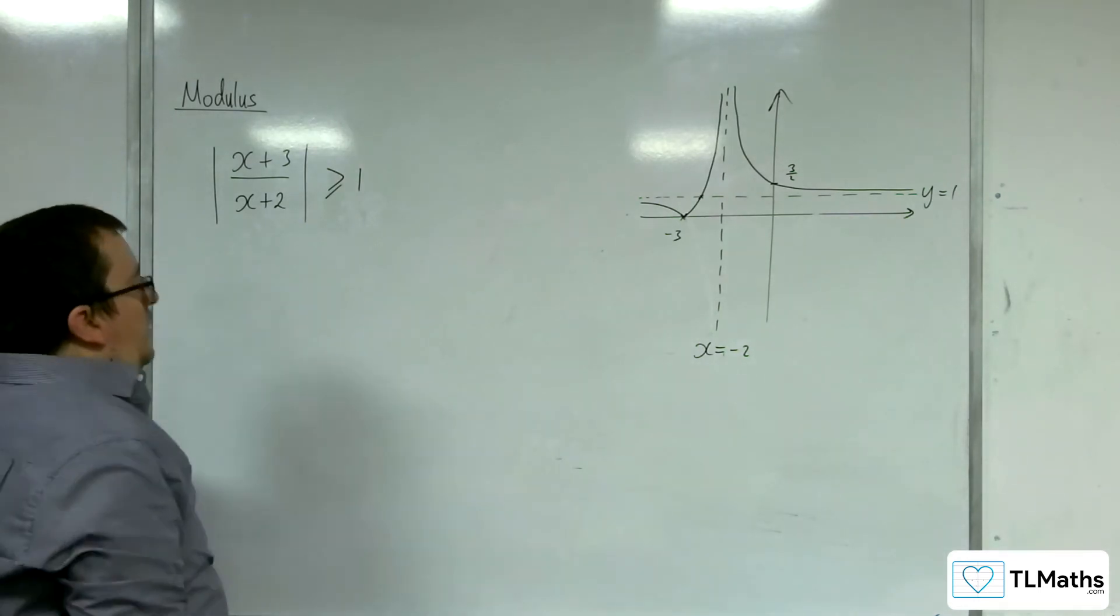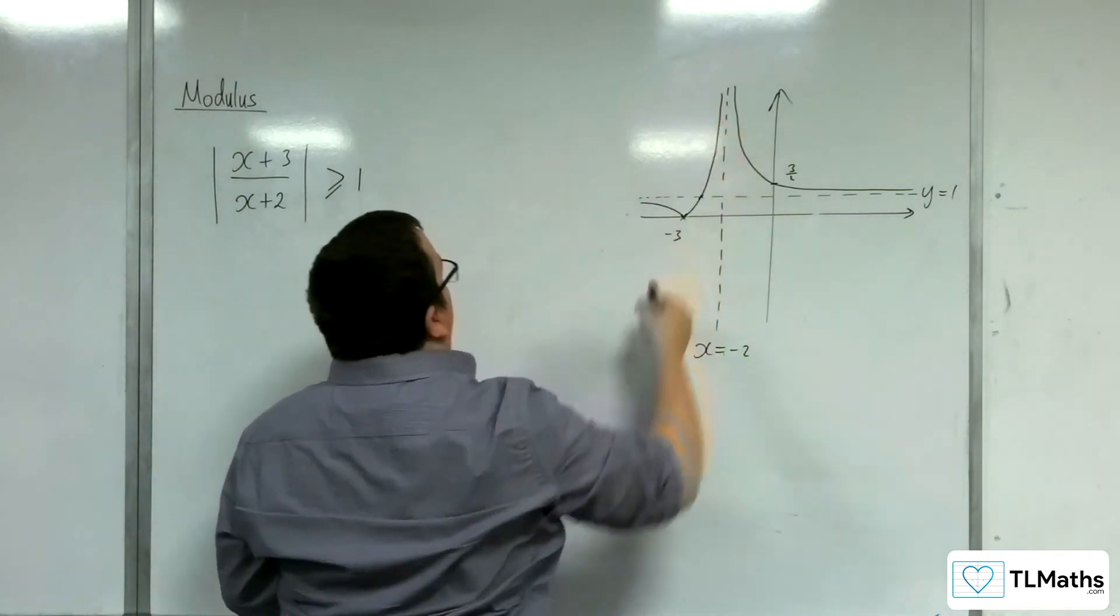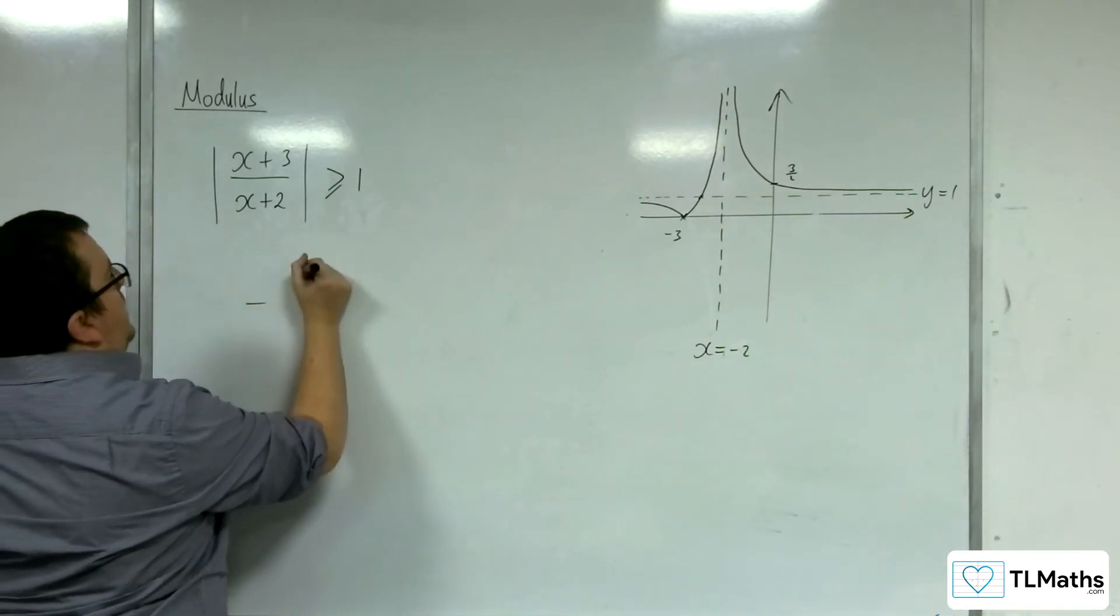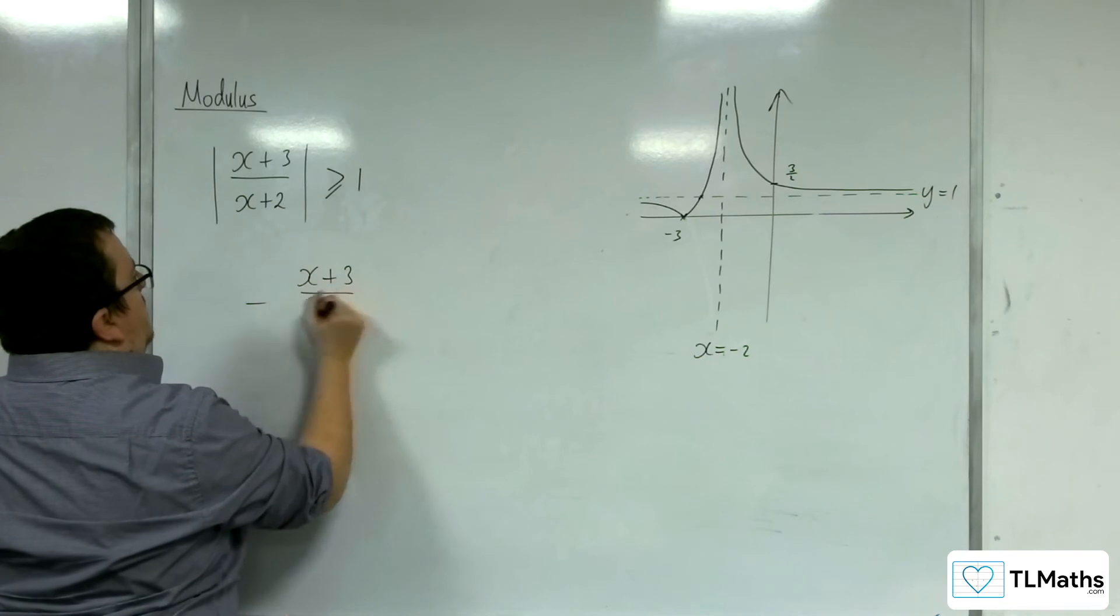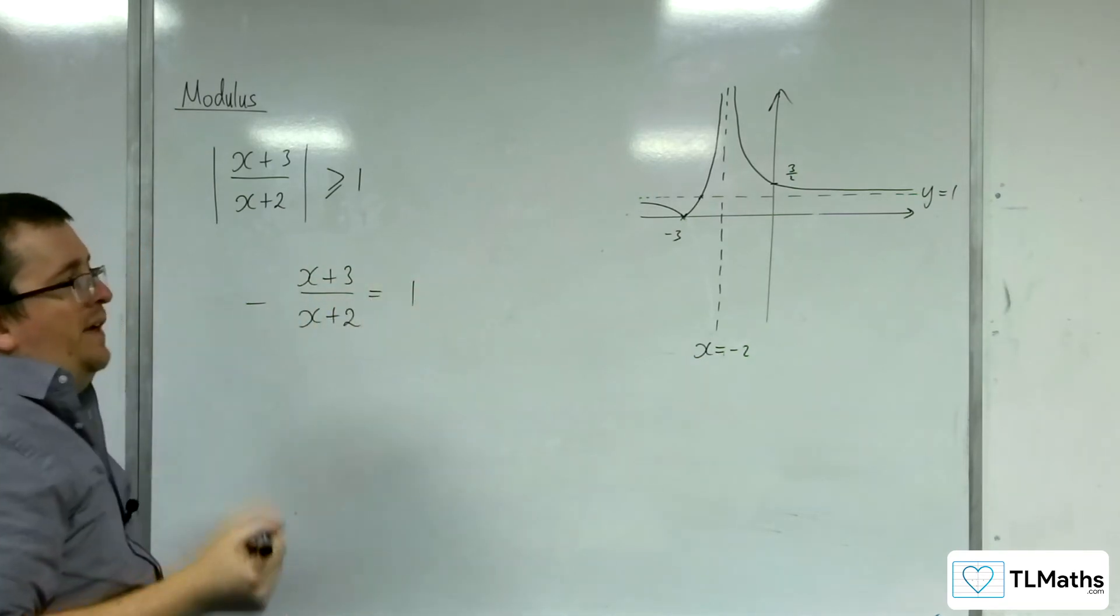So I need to put the negative part of the graph: minus x plus 3 over x plus 2 equals 1. I need to solve that equation.